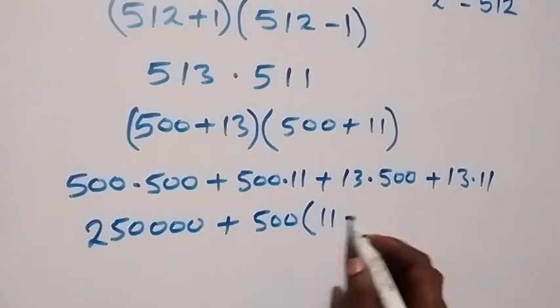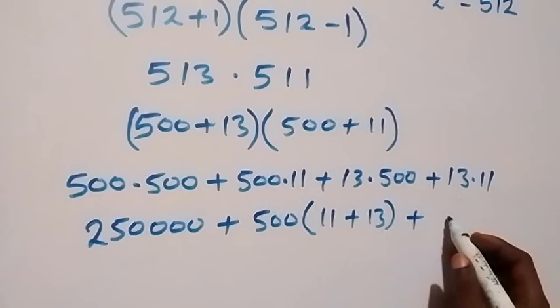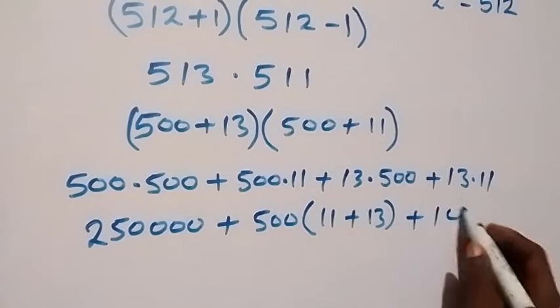Then, plus here we can bring 500 out of these two. And we have 11 plus 13 left. Then, plus here we have 13 times 11 equals 143.